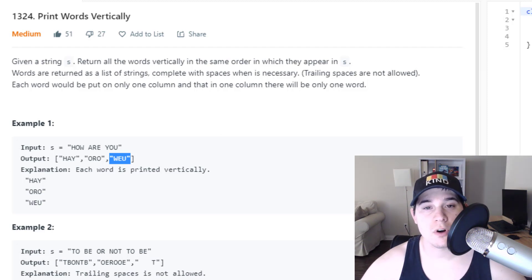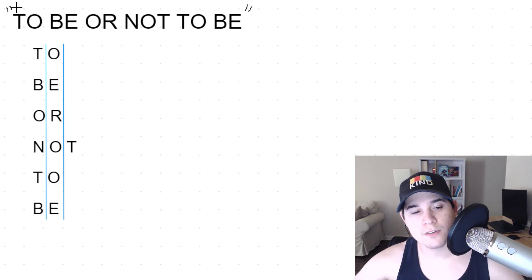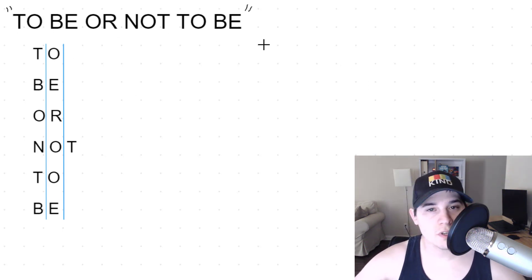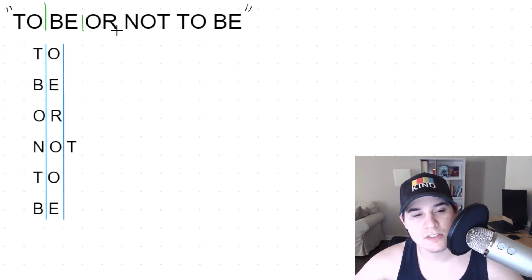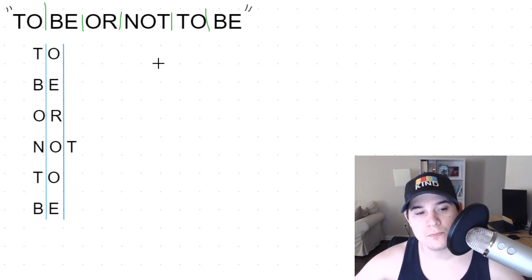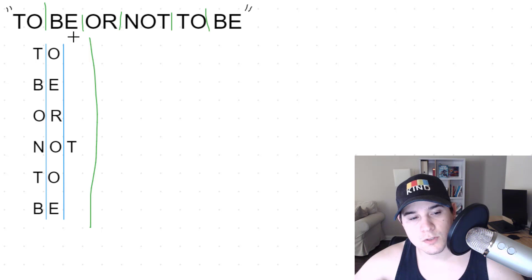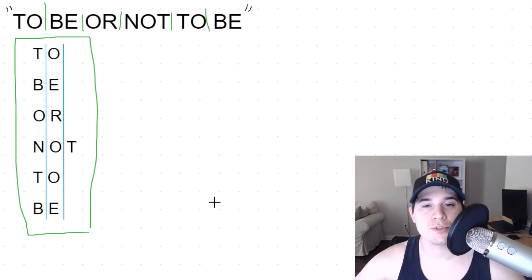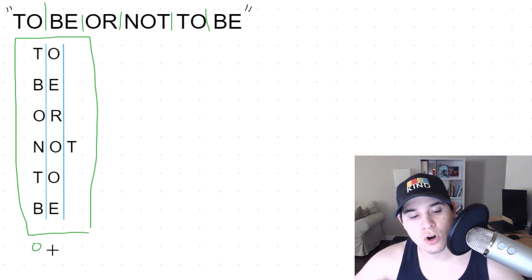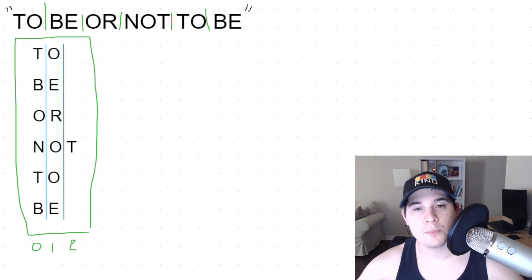To explain how to solve this problem, I'm going to go over the whiteboard and go over some examples. In this first example, we have a string S: 'to be or not to be'. If you imagine we split this string by spaces, we would be left with all of the individual words. We can easily see what we need to return — we need to return each column, specifically all of the characters in top-to-bottom order for every column.